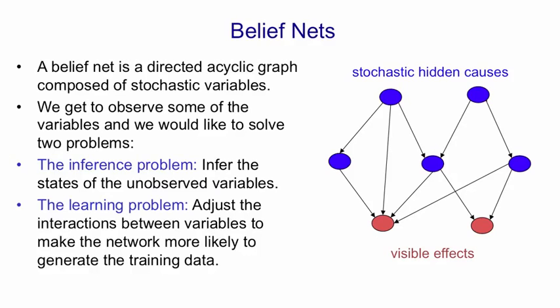The second problem is the learning problem. That is, given a training set composed of observed vectors of states of all of the leaf nodes, how do we adjust the interactions between variables to make the network more likely to generate that training data? Adjusting the interactions will involve both deciding which node is affected by which other node, and also deciding on the strength of that effect.